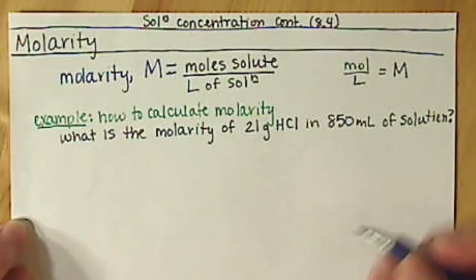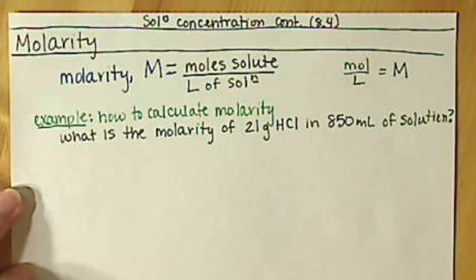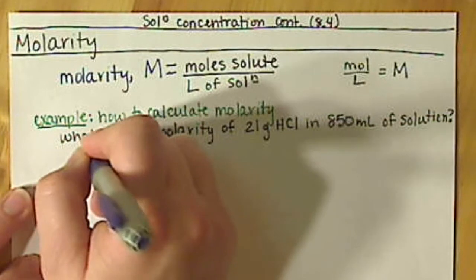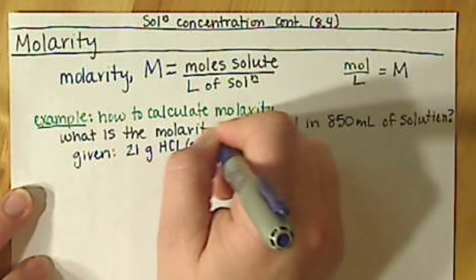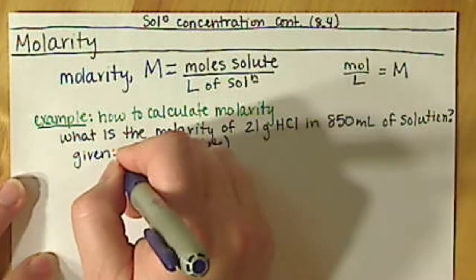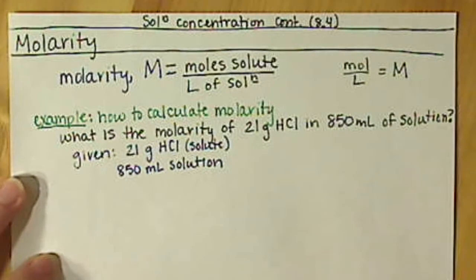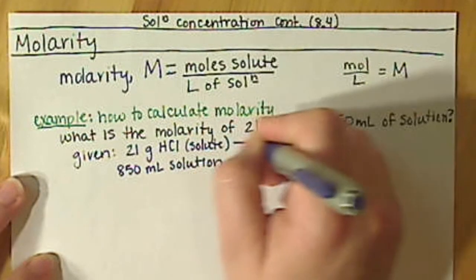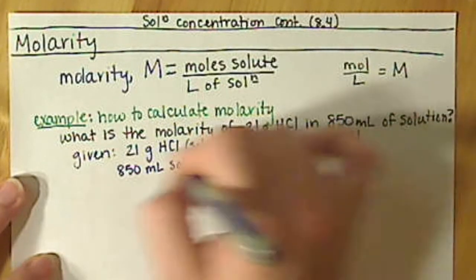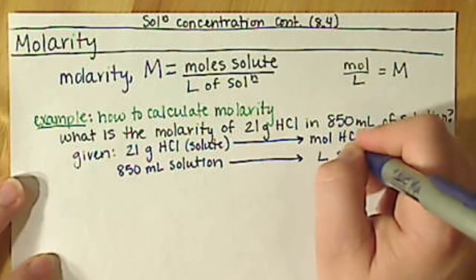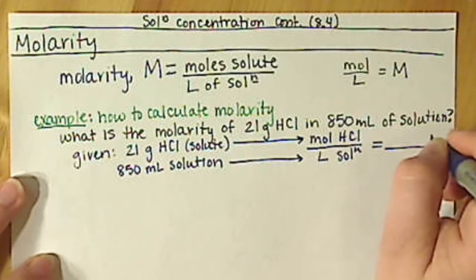We want to somehow get moles of our solute and liters of our solution. HCl is our solute, and we've been given 21 grams of HCl. We've also been given 850 milliliters of our solution. What we need to do is convert our grams of HCl into moles of HCl, and our milliliters of solution into liters of solution. Then dividing these two values will give us our molarity.